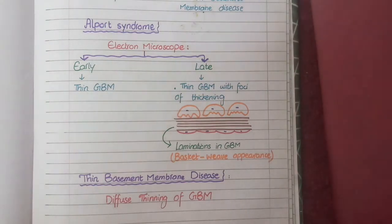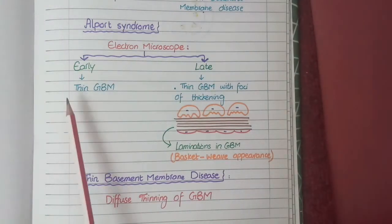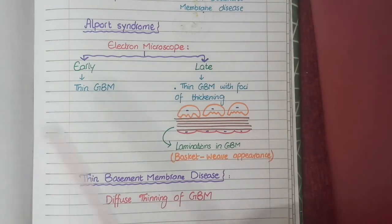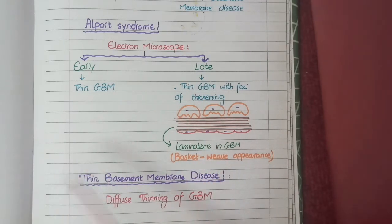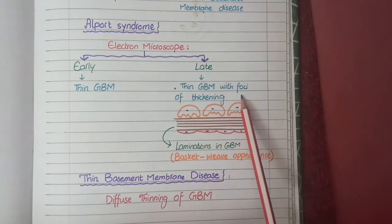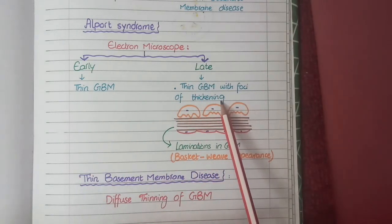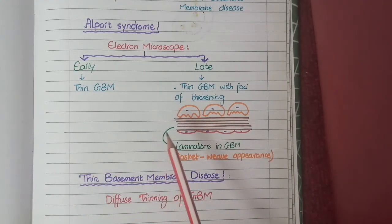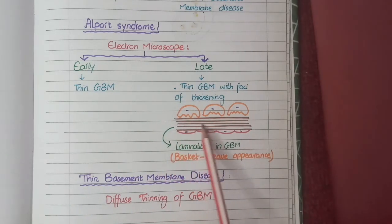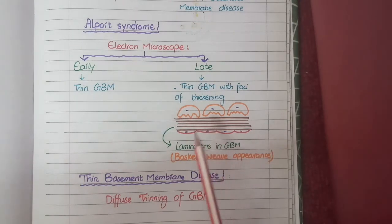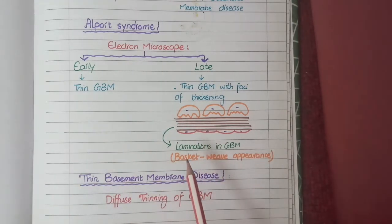We will mainly study the electron microscopic features. In Alport syndrome, early cases will show thin glomerular basement membrane, but in late cases, along with thinning of the glomerular basement membrane, there will be some foci of irregular thickening. These alternate areas of thickening and thinning appear like laminations or layers in the glomerular basement membrane.